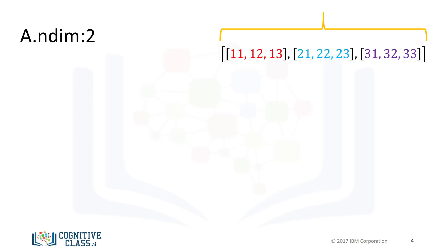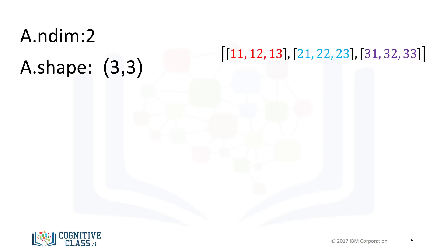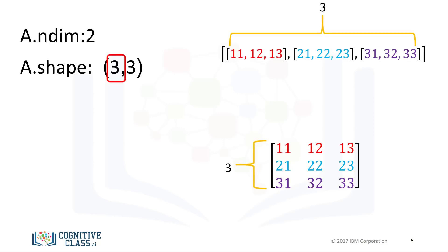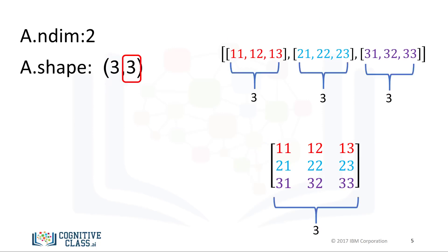The first list represents the first dimension. This list contains another set of lists, which represents the second dimension or axes. The number of lists the list contains does not have to do with the dimension, but the shape of the list. As with the 1D array, the attribute shape returns a tuple. It is helpful to use the rectangular representation as well. The first element in the tuple corresponds to the number of nested lists, or the number of rows in the rectangular representation — in this case 3. The second element corresponds to the size of each of the nested lists, or the number of columns in the rectangular array. The convention is to label this axis 0 and this axis 1.